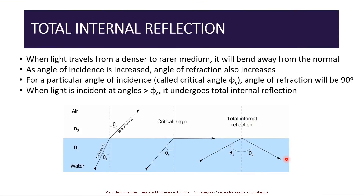Now let us see what we mean by total internal reflection. When light travels from a denser medium to a rarer medium, it will bend away from the normal. As the angle of incidence is increased, the angle of refraction also increases. For a particular angle of incidence called the critical angle φc, the angle of refraction will be 90 degrees — it will graze the surface of the boundary. For all angles greater than φc, light gets totally reflected towards the denser medium itself — that is total internal reflection. The angle of reflection will equal the angle of incidence, following the laws of reflection.